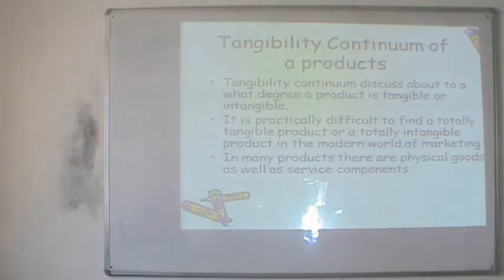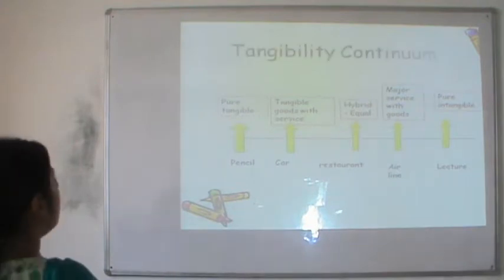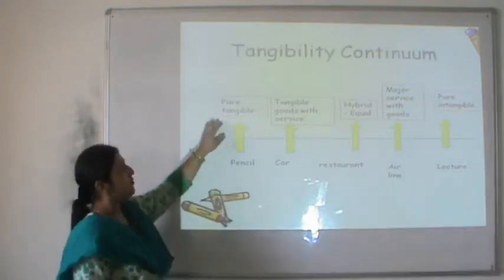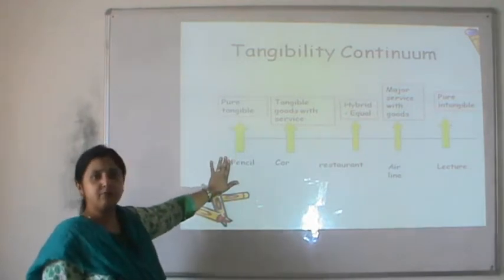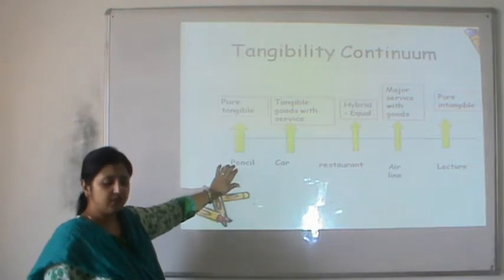The tangibility continuum helps us discuss to what degree a product can be purely tangible or purely intangible. However, it is practically difficult to find a totally tangible or totally intangible product in the modern world. In many products, physical goods and service components are bundled together to give the consumer extra benefit. At one extreme there may be a purely tangible product, though very few products fall into this category.